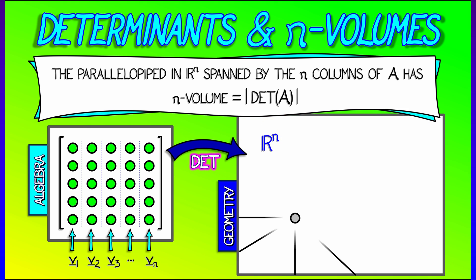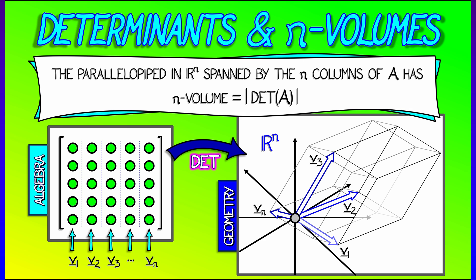You need to be able to go from the algebra of the columns of the matrix over to the geometry of what happens in n-dimensional space when I have those n vectors spanning an n-dimensional parallelepiped.